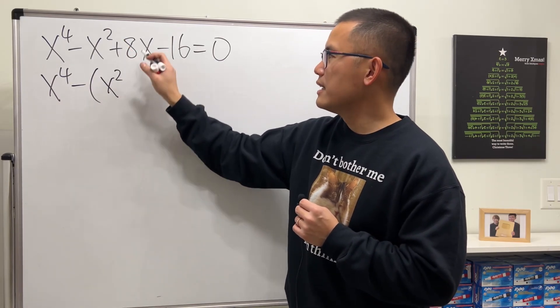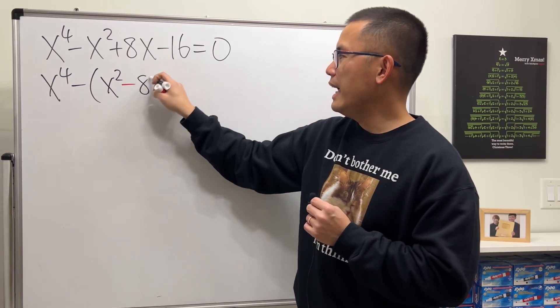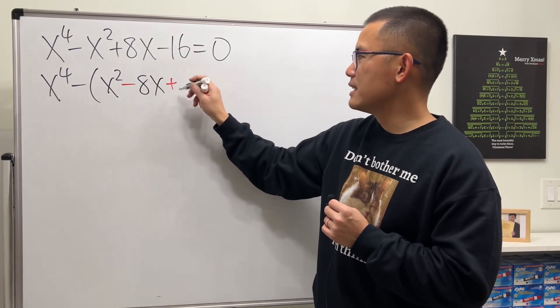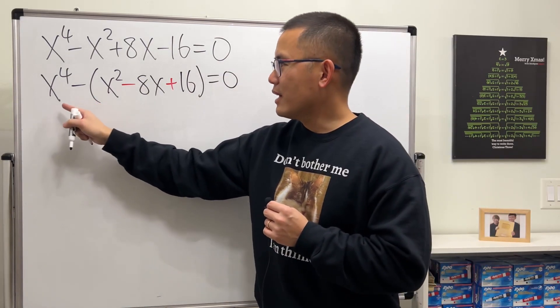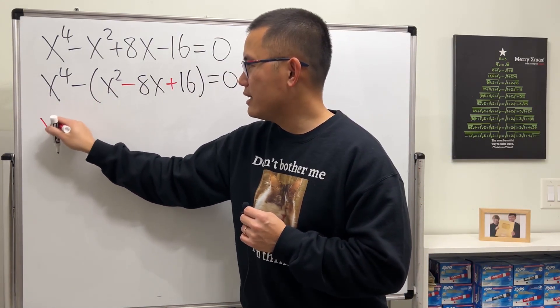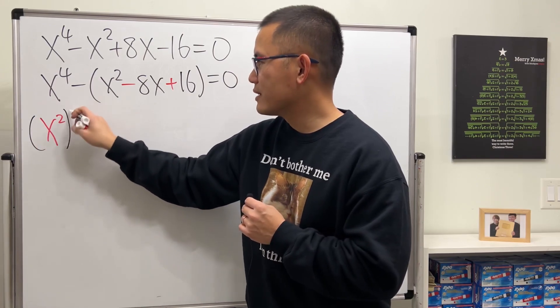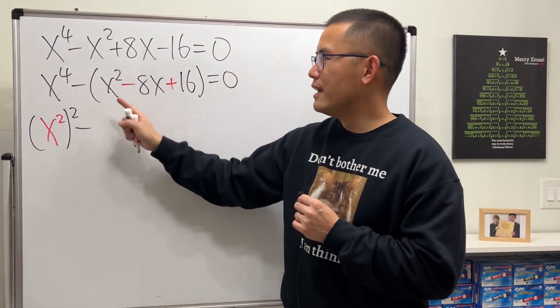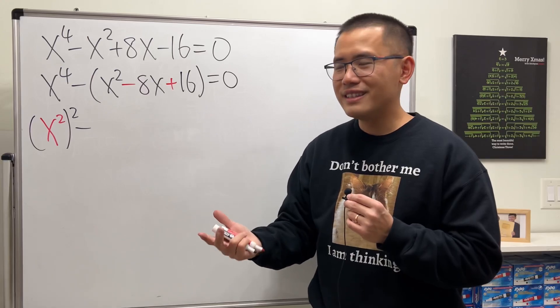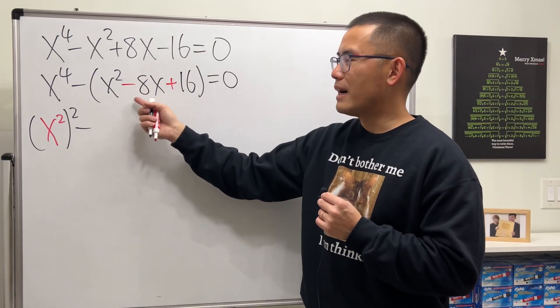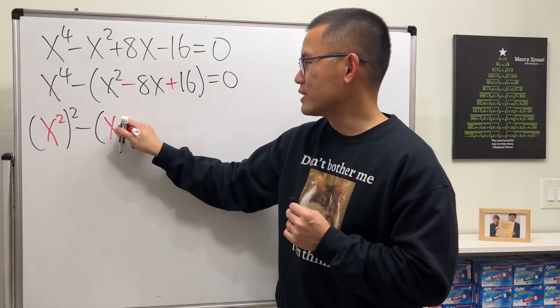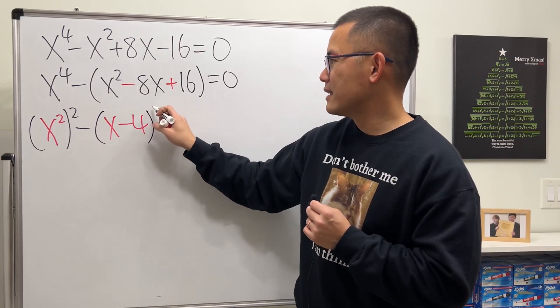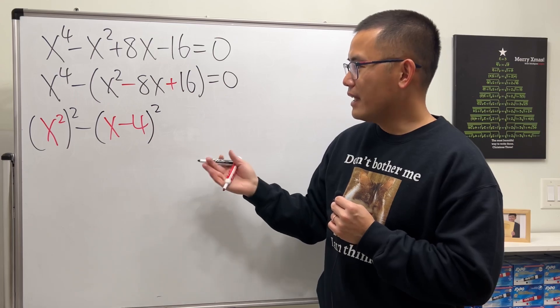So now this right here, let me write it as x squared and then squared, and then minus these three terms. If we factor it we get x minus 4 times x minus 4, so that's just (x - 4) squared.